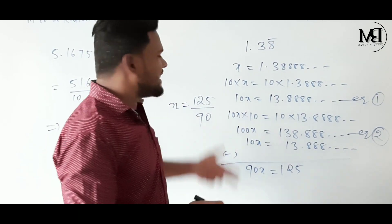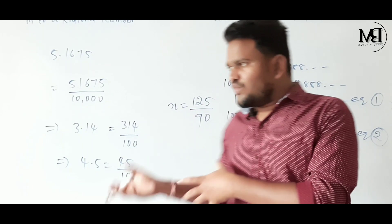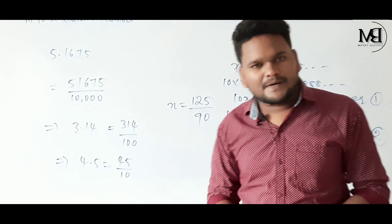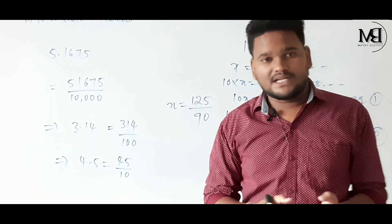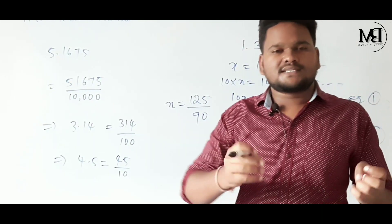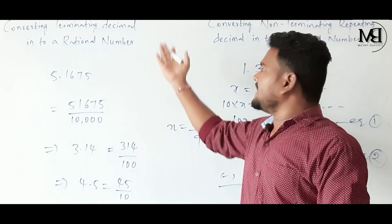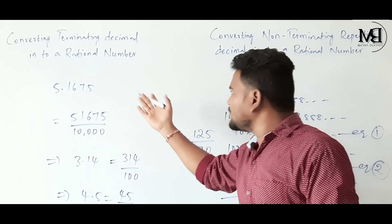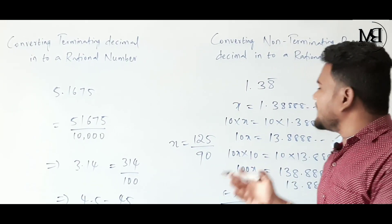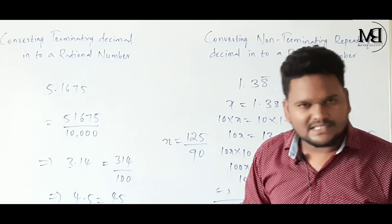We can also simplify it further. 125 divided by 90 is the rational number. Hope you understood today's class — conversion of terminating decimal into a rational number and converting non-terminating repeating decimal into a rational number.